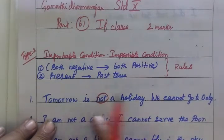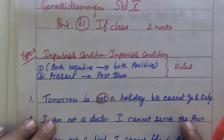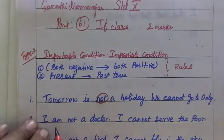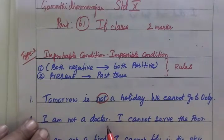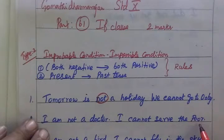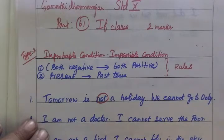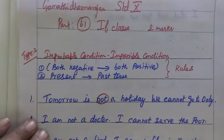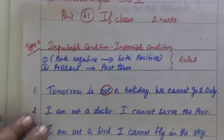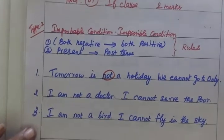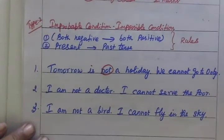This sentence represents the impossible condition. I am not a doctor, so I cannot serve the people. I am not a bird, so I cannot fly in the sky. In these sentences, the action is not possible.